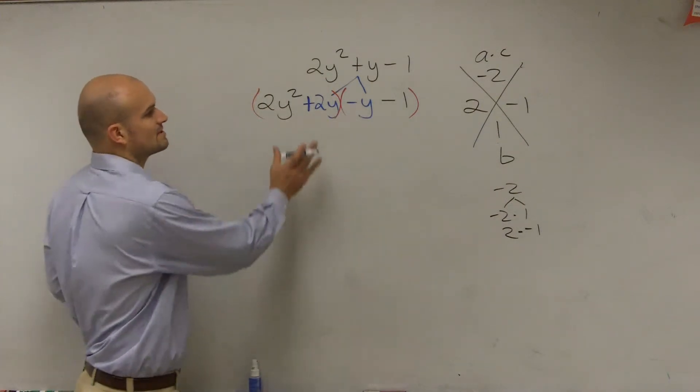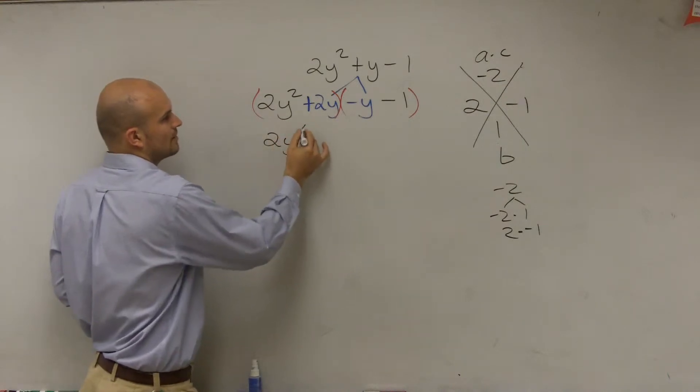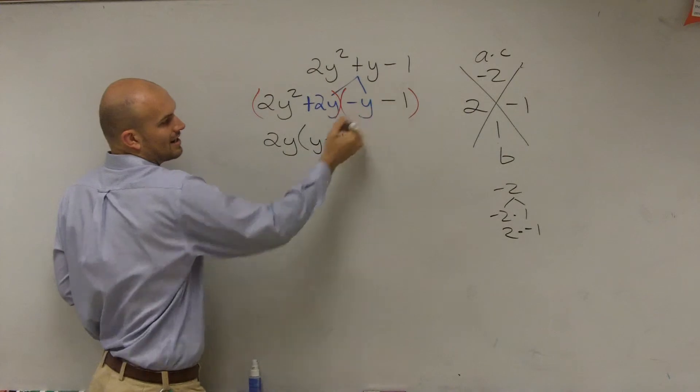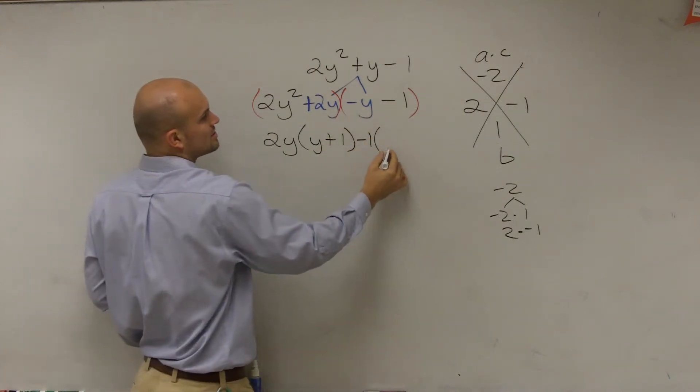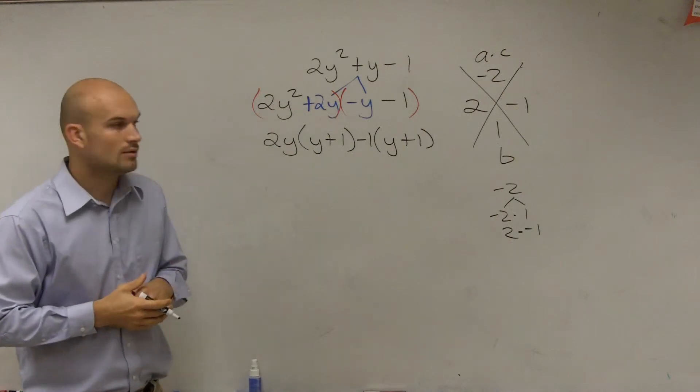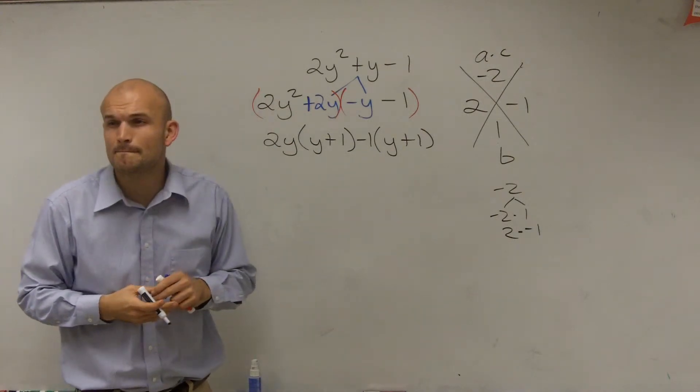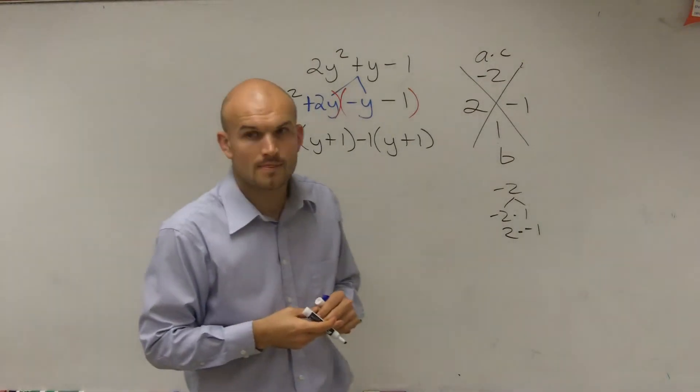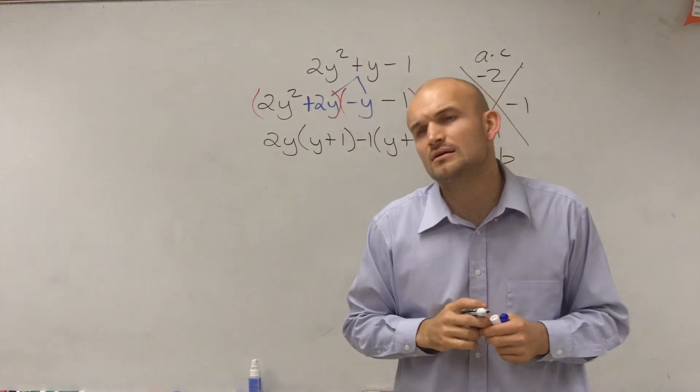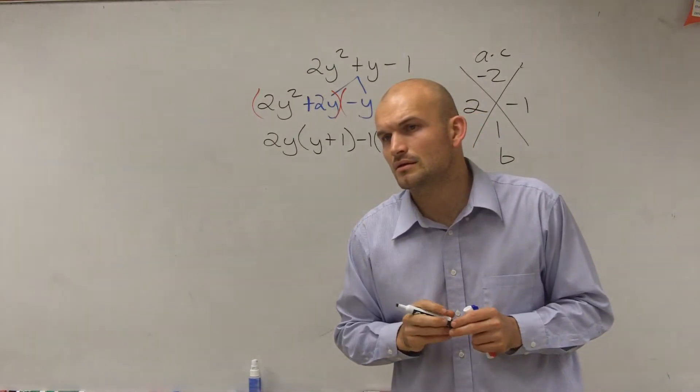So now, what I'm going to do is I'm going to say, what can I factor out of here? You can factor out a 2y, which leaves you with a y plus 1. And here I can factor out a negative 1, which is going to leave you with a y plus 1.